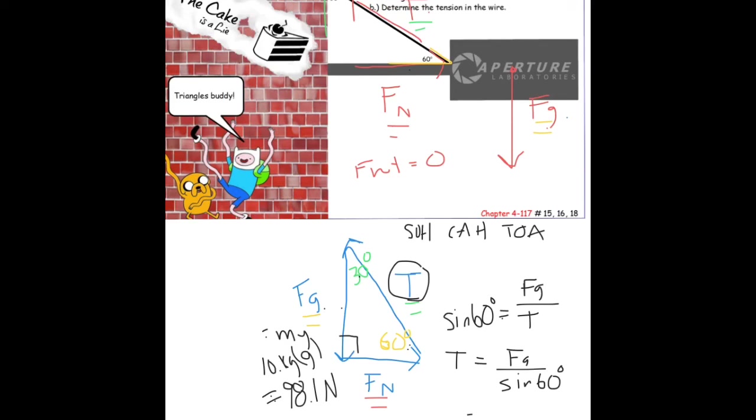Just to refresh how we got to this point: we started with a free body diagram up top, showing all the forces acting on it. Then we drew a vector addition, adding them tip to tail. The force of gravity down plus the normal force to the right plus the tension up at an angle gets me back where I started. I found angles from the initial diagram, and now knowing the force of gravity, I can use a trig ratio to find the tension.